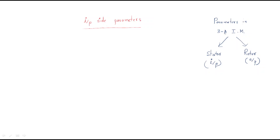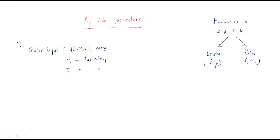First, the input side parameters. We are always giving input to the stator, so the stator input is given by: root three times V1, I1, and cosφ1. Here V1 is the line voltage, I1 is the line current, and cosφ1 is the input power factor.